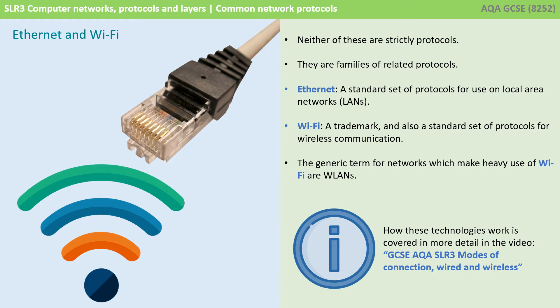The first two protocols you need to be aware of are Ethernet and Wi-Fi. Now strictly, unlike all the other protocols, neither of these are actually protocols in their own right. They are families of related protocols. Ethernet is a standard set of protocols for use on local area networks, LANs. Whereas Wi-Fi, which is a trademark and also a standard set of protocols, are used for wireless communication. We cover these in more detail in the video SLR3 modes of connection wired and wireless.